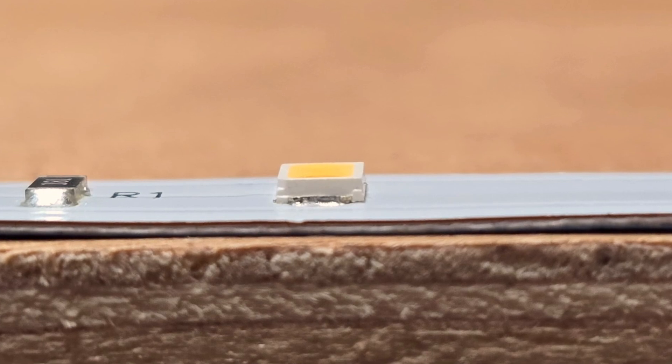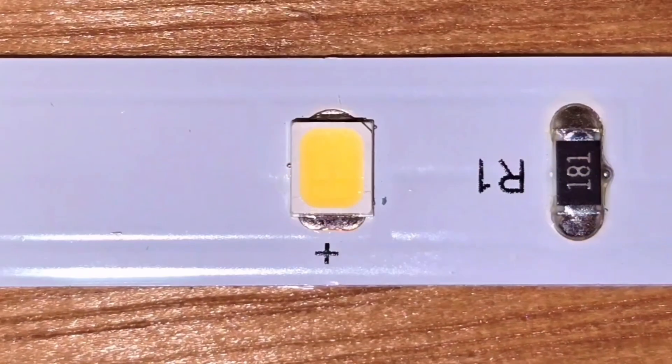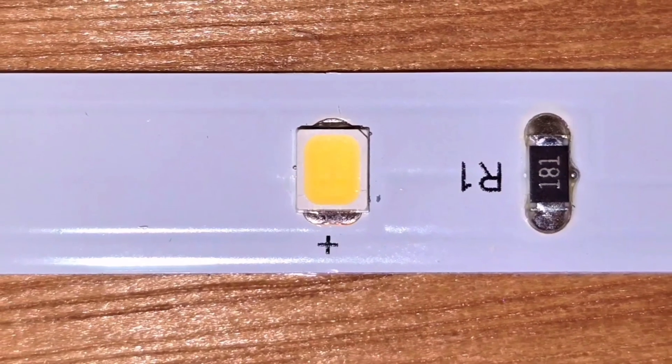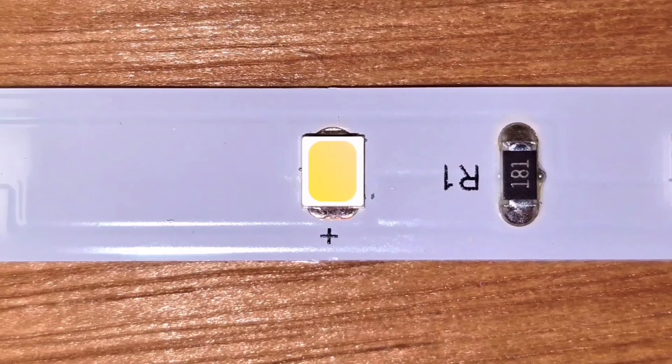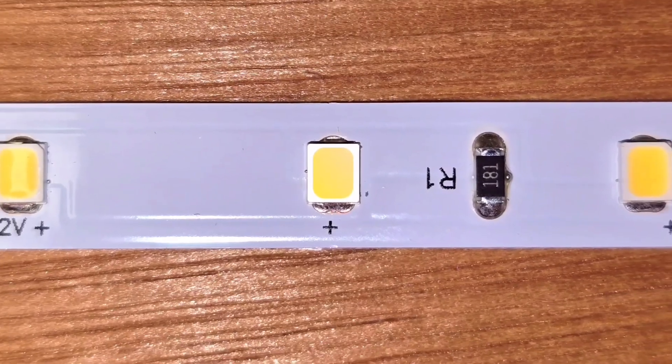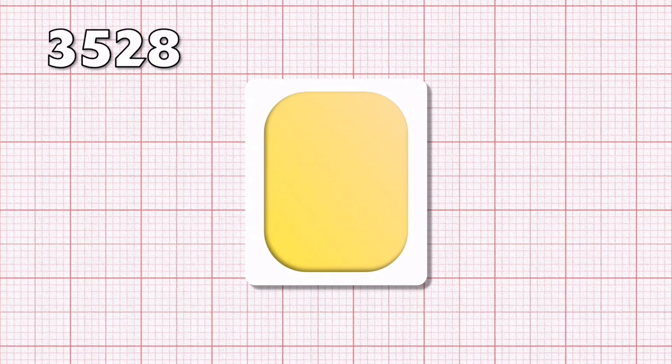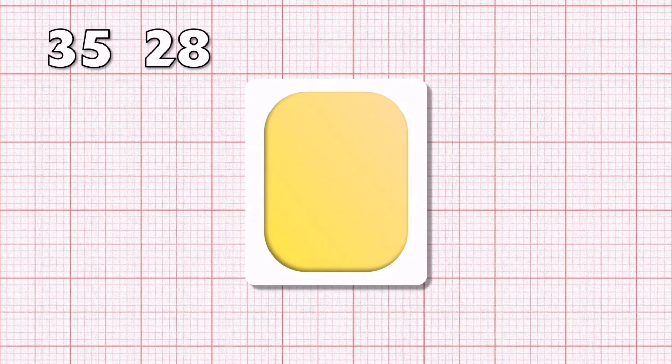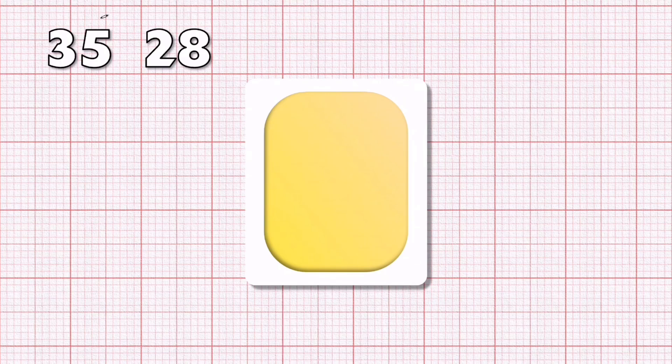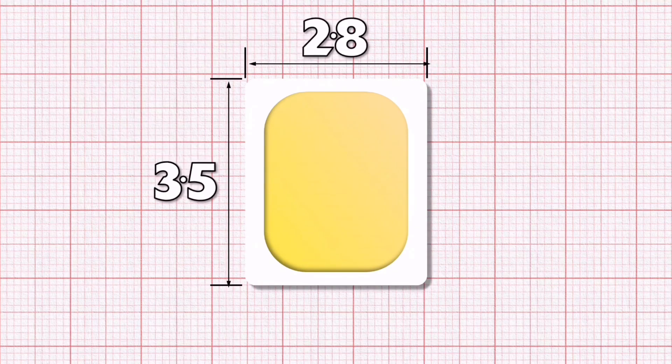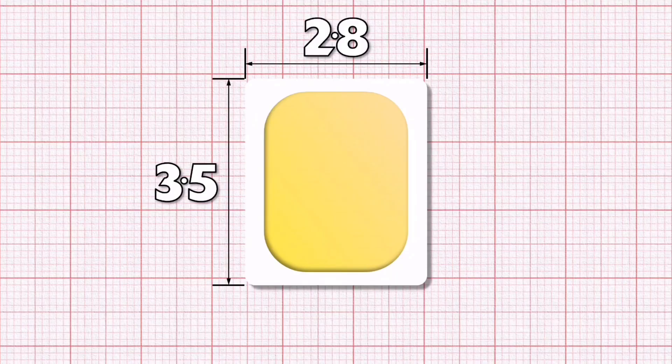You might hear manufacturers referring to SMDs with a four digit number. This number is all to do with the physical size of the LED. The first two digits give the length of one side of the LED casing in millimeters and the second two give the length of the other side. A common size is the 3528 LED. You have to imagine that there's a decimal point between the two numbers in each pair, so this size would measure 3.5 by 2.8 millimeters.